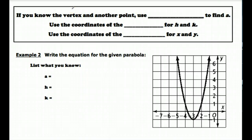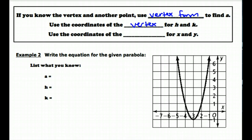If you know the vertex and another point, you always want to use vertex form to find a, just like we did in example one. You're going to use the coordinates of the vertex for h and k, and then you're going to use the coordinates of the other point for x and y. So to summarize: h and k are the coordinates of the vertex, and x and y are the coordinates of the other point.